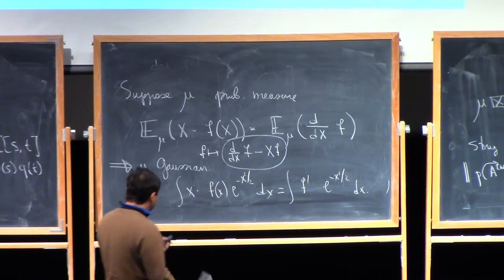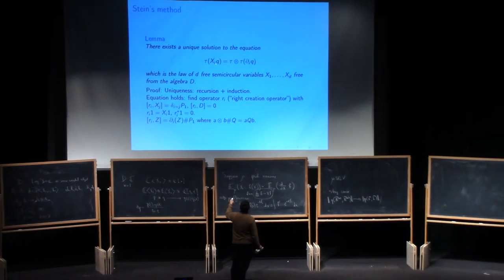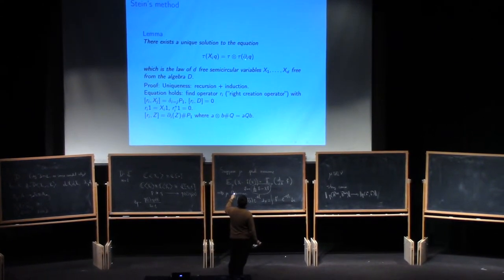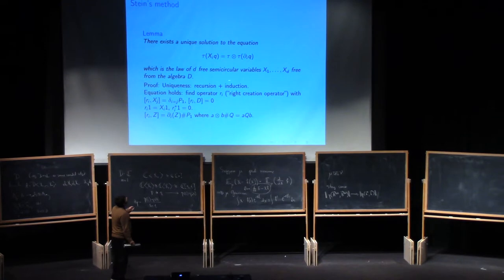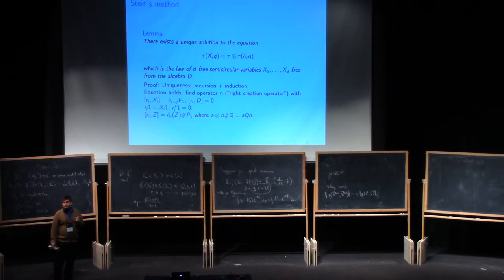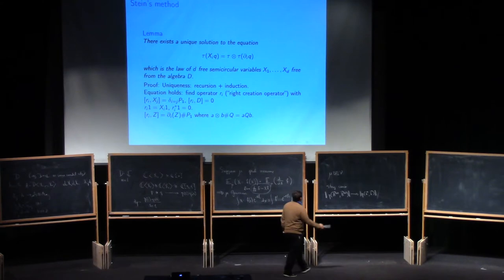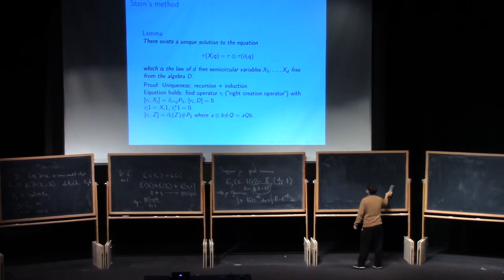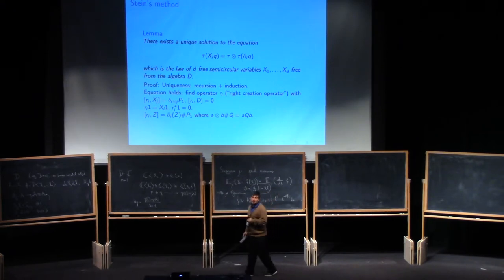So, what I claim is that there is a corresponding statement in free probability, namely, there is this equation here. So, it's the expected value of a product like that is the same thing as tau tensor tau of this derivative. And I claim that this actually characterizes two things. One is that x_1 to x_d are free semicircular variables. And secondly, that they actually are free from the coefficient algebra D. Now, this is... to prove this, there are two steps. One is that you can prove uniqueness. So, you can prove that if this were to hold, then actually the law is determined completely.